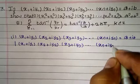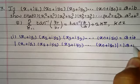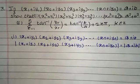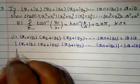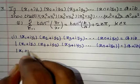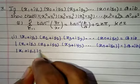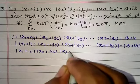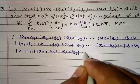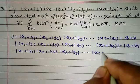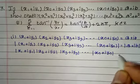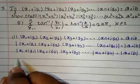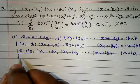So modulus of x1 plus iy1 into modulus of x2 plus iy2 into modulus of x3 plus iy3 and so on, modulus of xn plus iyn equals modulus of a plus ib. Each modulus equals the root of real part squared plus imaginary part squared.